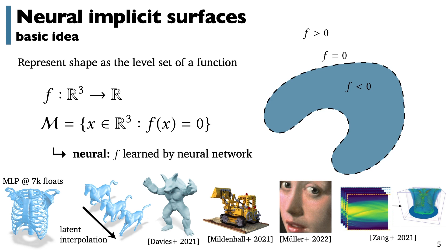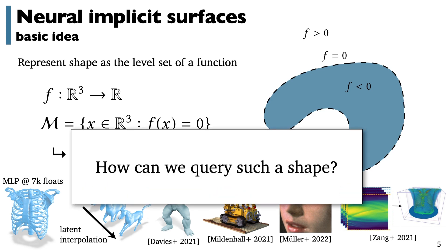So given all of these cases where we might want to use a neural implicit representation of a shape, how do we query that representation? For instance, how do we take a ray that we want to cast in space and find where it intersects the surface? Or given two of these neural implicit shapes, how do we test whether or not they overlap each other?